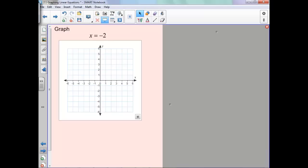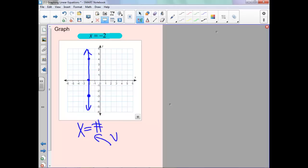When we have x equals negative 2, notice this means x is always negative 2. So, always negative 2, it does not matter what y is. That means your x is negative 2 when your y is 0. When your y is 4, your x is still negative 2. When your y is negative 3, your x is still negative 2. Notice it's just a vertical line through negative 2. So anytime you have x equal a number, this is going to be a vertical line.